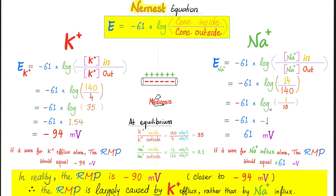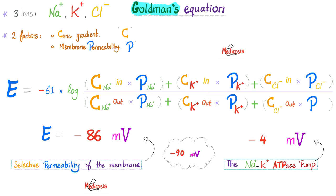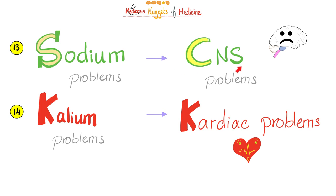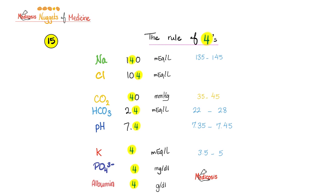Here is the Nernst equation. Pause and review. This is the Goldman's equation. Sodium problems cause CNS problems, but calcium problems cause cardiac problems. The rule of force.